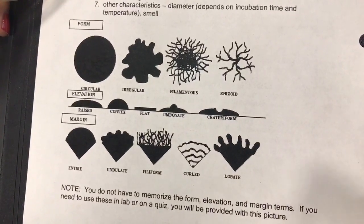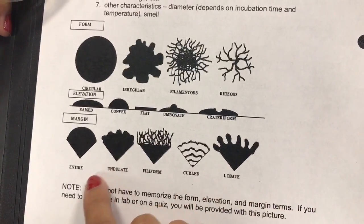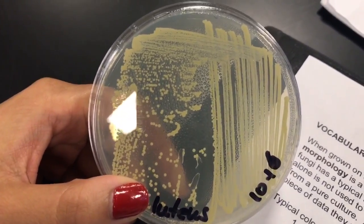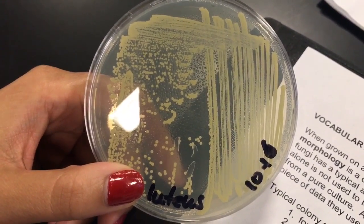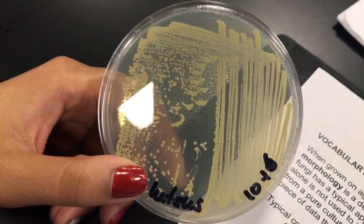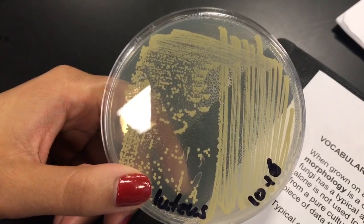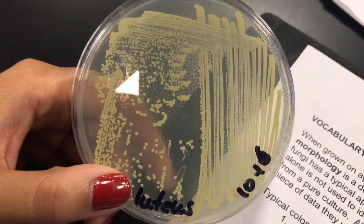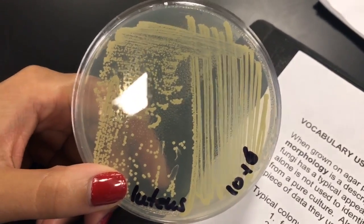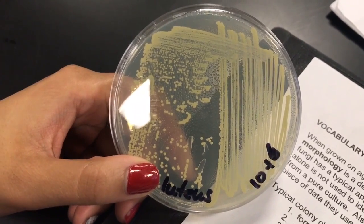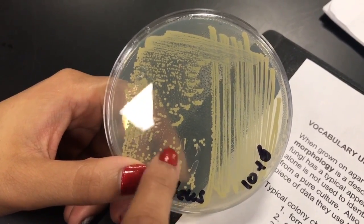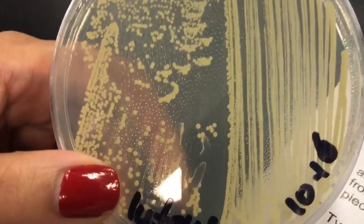The margin is entire throughout, because its edge or borders are circular. Its optical properties are opaque, because light is not translucent through it. Its texture is soft, which you can test with an inoculating loop by touching it. Its pigment is really going to help identify this organism — as you can see, it's very unique and is a yellow color. Other characteristics include measuring the diameter, though there will be variance in diameter across different colonies.